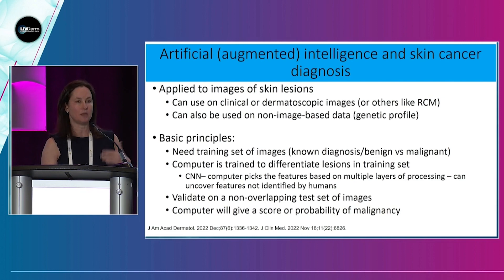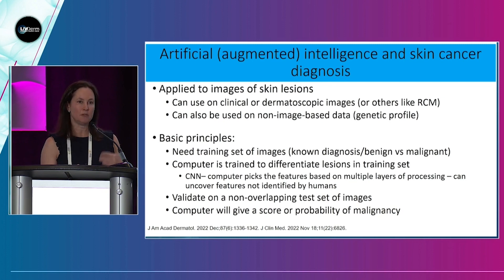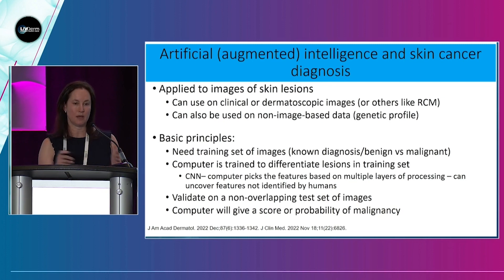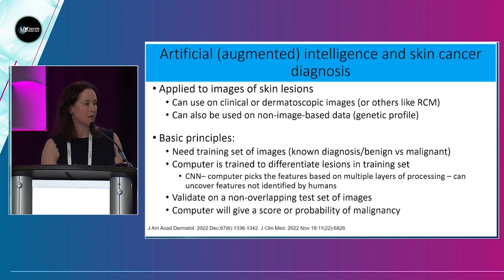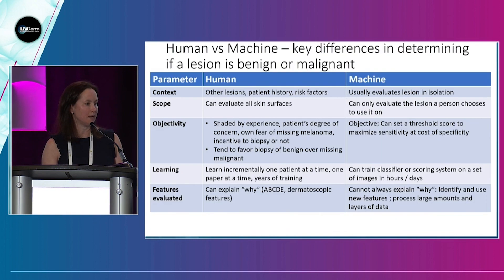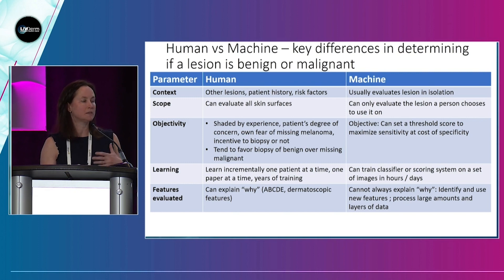Then we test this on a new set of non-overlapping images. Generally when we're talking about skin cancer, we'll either get a benign/malignant/watch-biopsy classification, or a more linear scale from benign to malignancy. So how does AI differ from what we do as dermatologists?